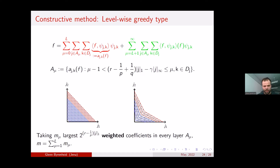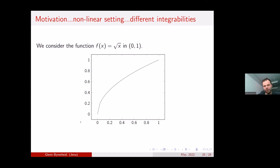Let me illustrate the difference between linear and nonlinear approximation. Consider the square root function on [0,1]. If we approximate it by piecewise polynomial functions with equidistant knots at k/n, we get a rate of 1/√n.